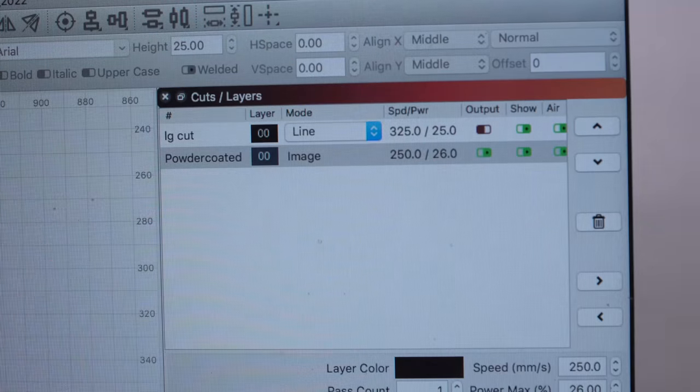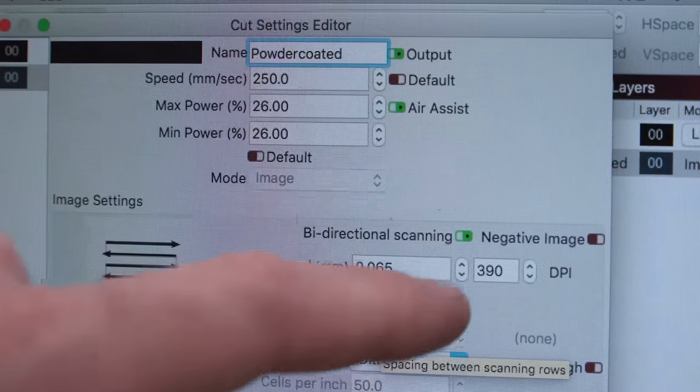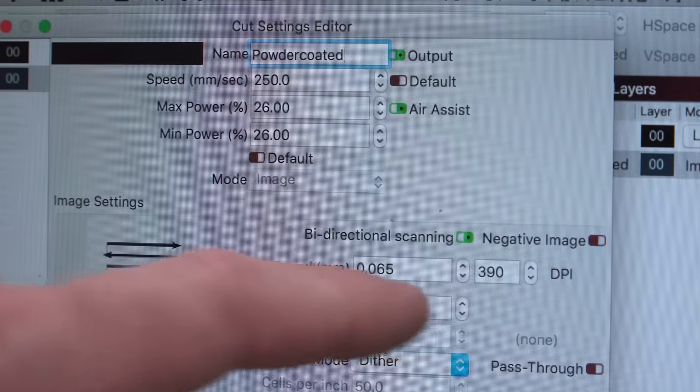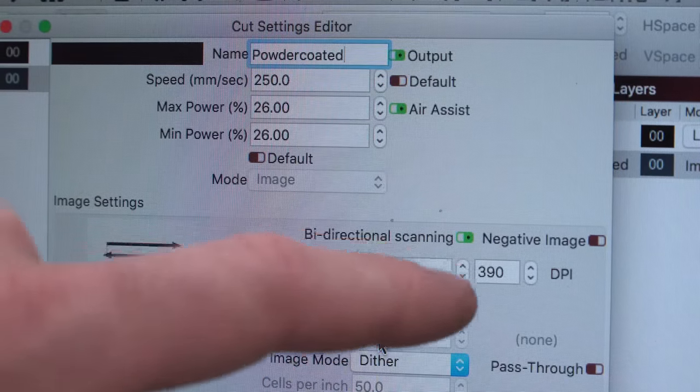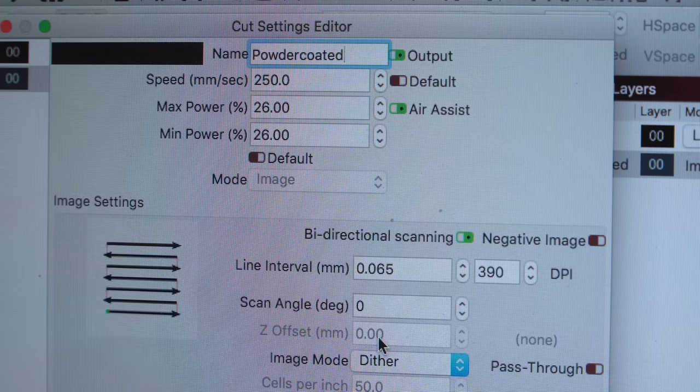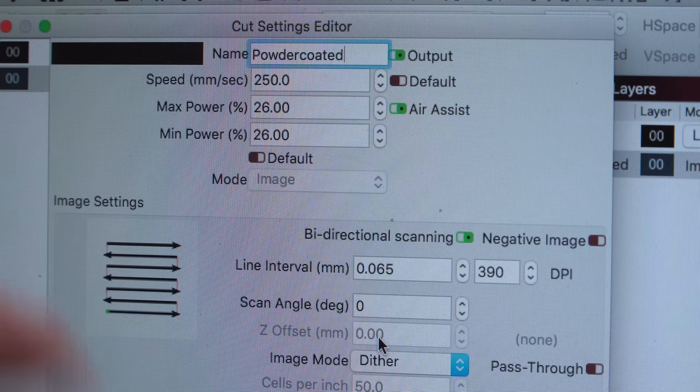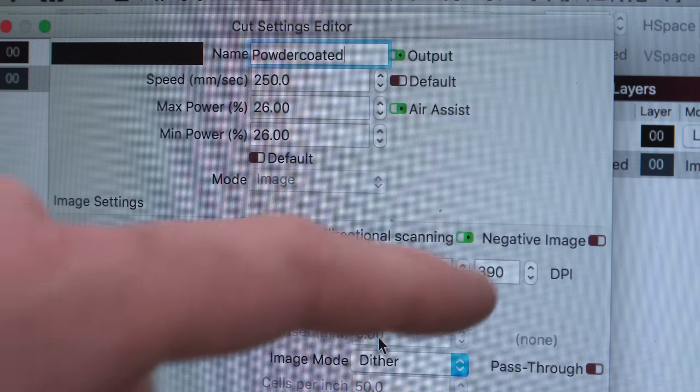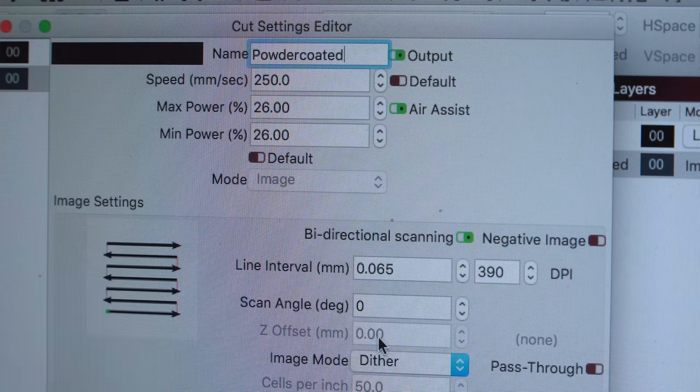This tends to work pretty well for me. And the last number that's worth knowing is this interval or scan gap. I like about 390 dots per inch. That ends up being a lot of passes and it makes it take a little bit longer, but it gives me a cleaner line when it's all said and done. If you drop that number way down, you could reduce your laser time by quite a bit. But I found that this is where I like mine to be set.